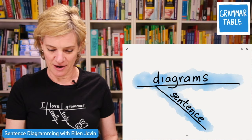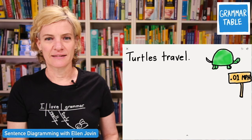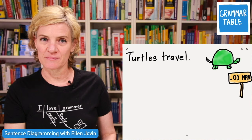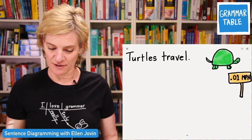The very first thing we're going to talk about is the sentence. This is one of the shorter sentences that you can have. So your job when you're diagramming is to decide, first of all, what the subject is and what the predicate is. You do not have a lot of choices here. If you're thinking to yourself, turtles is the subject, you are correct.